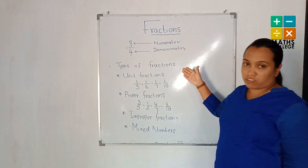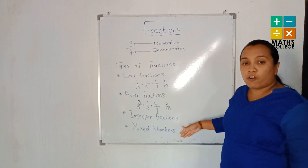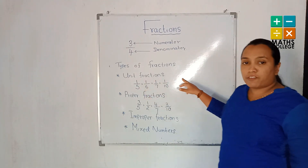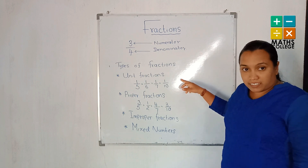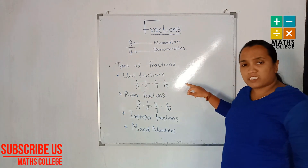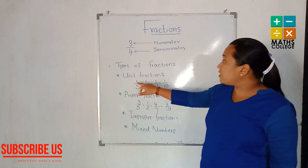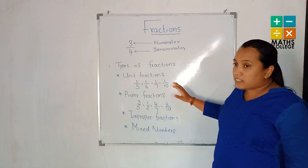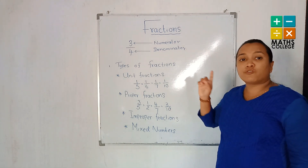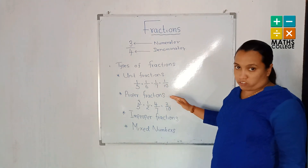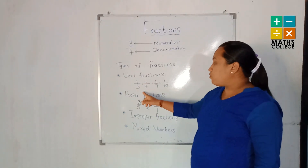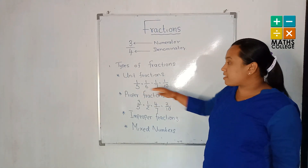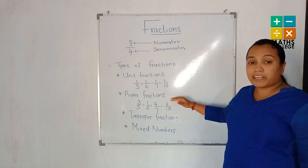What are the types of fractions? There are four types of fractions. The first one is unit fractions. Did you learn that in grade 6? The special feature is that the numerator of the fraction is equal to 1. That is the unit fraction. For example: 1 upon 5, 1 upon 6, 1 upon 7, and 1 upon 10.